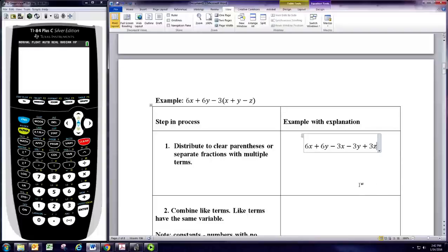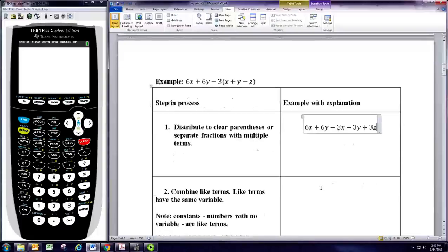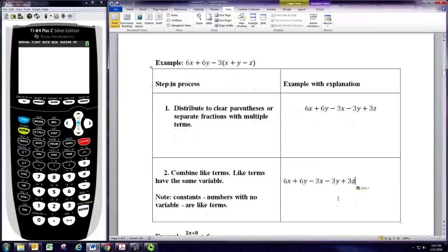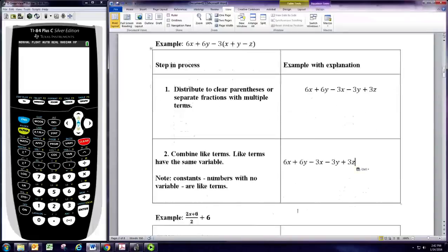So, now the parentheses are cleared and we can combine any like terms. You can see that we have all variable terms this time, no constants. And there are actually two pairs.